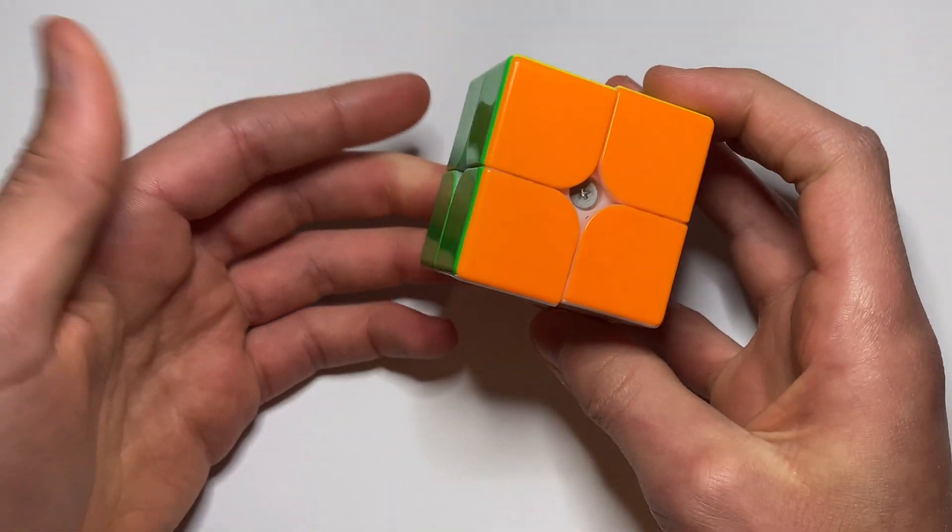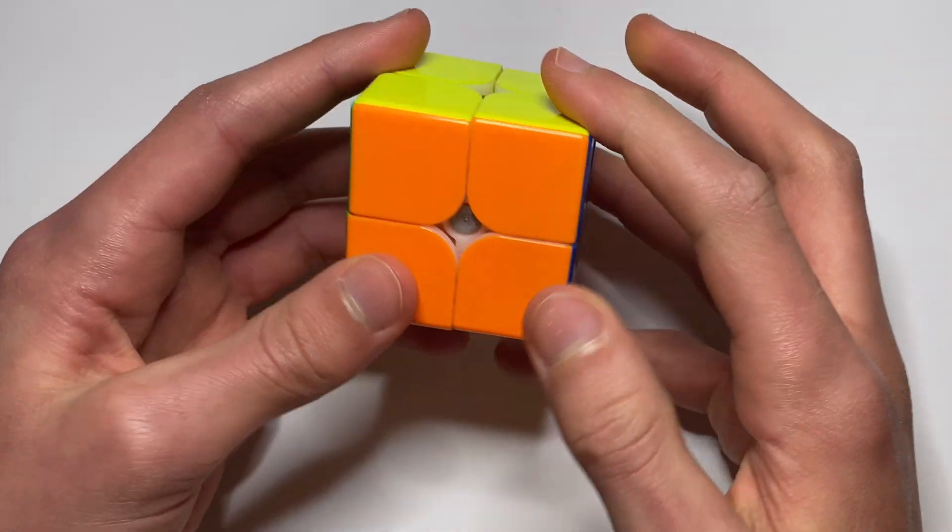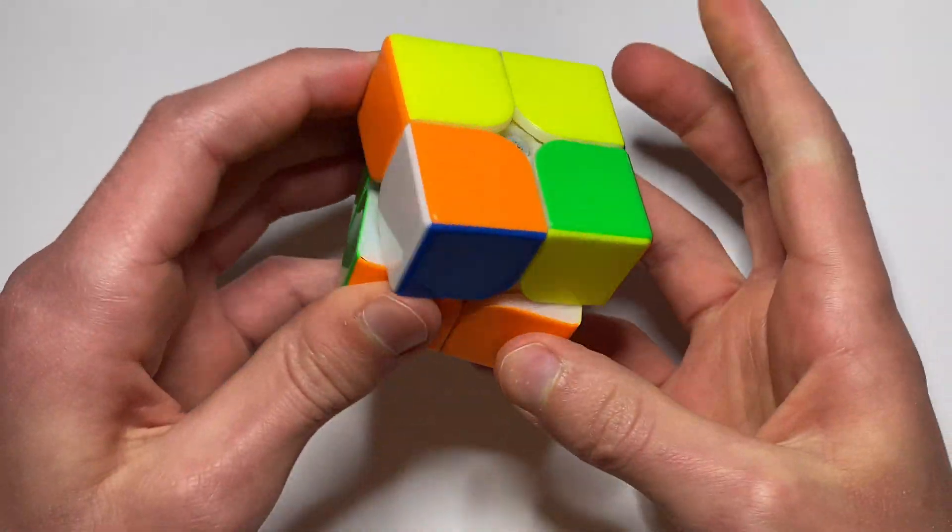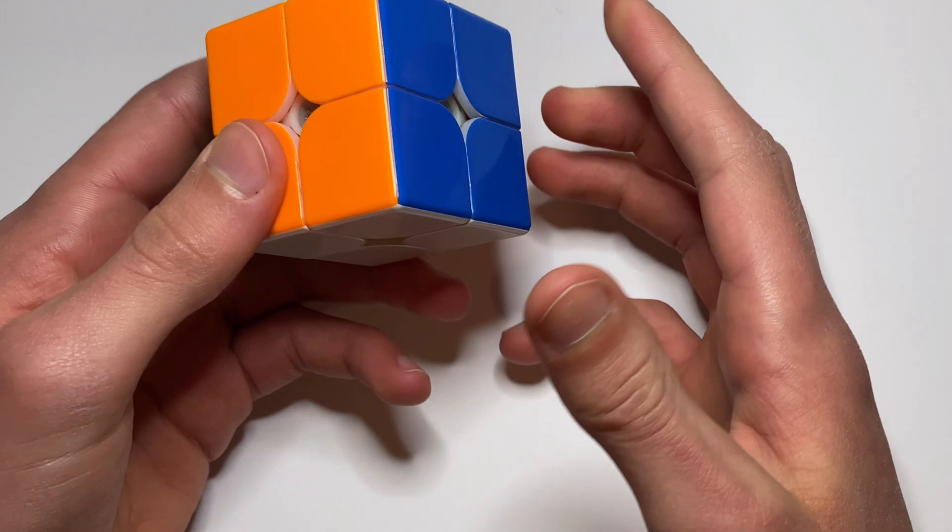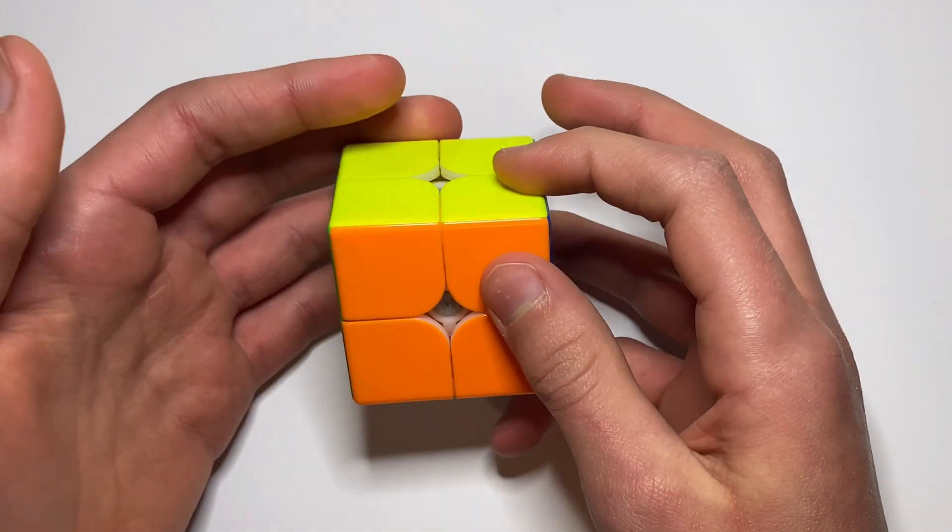So these algorithms are really important for 2x2 Ortega and they can help you get really fast at Ortega for 2x2 because they save a lot of re-grips and less moves. So you can just be about a second faster.